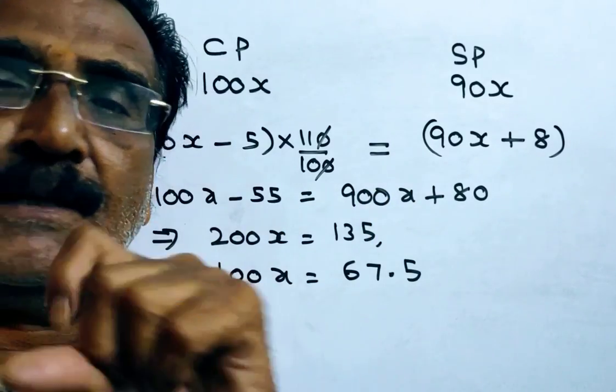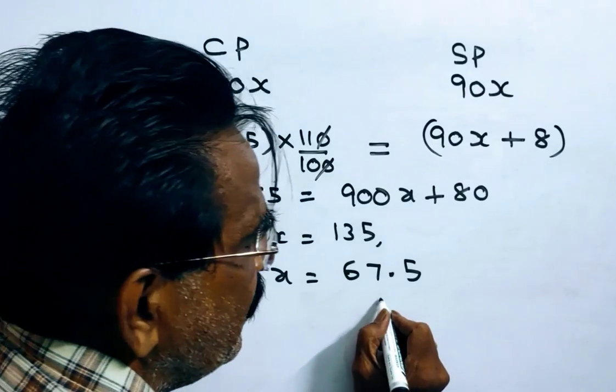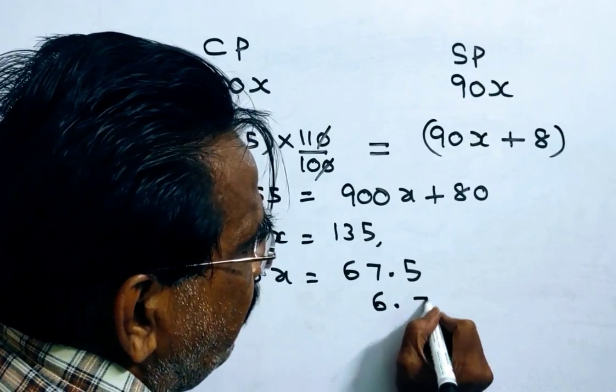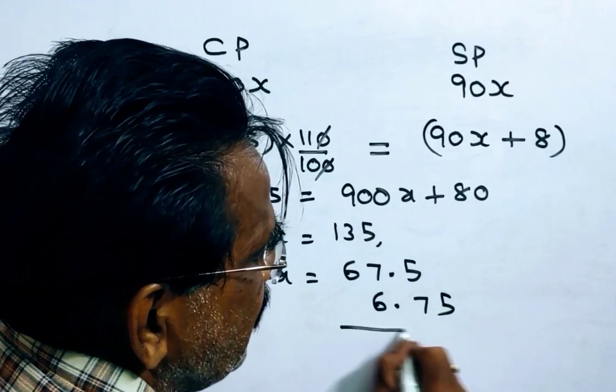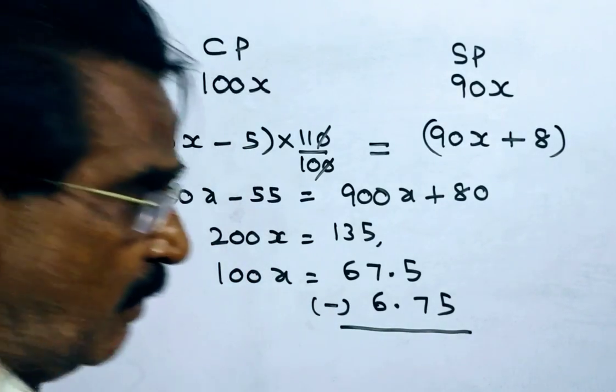It was sold at 10% loss. So, 10% of 67.5, Rs.6.75. So, this was sold at 6.75 loss.